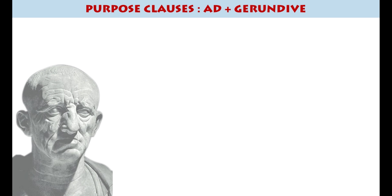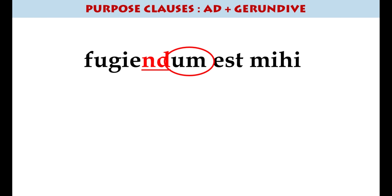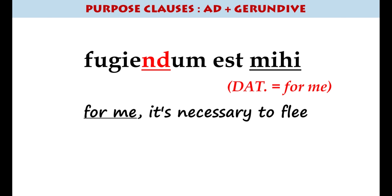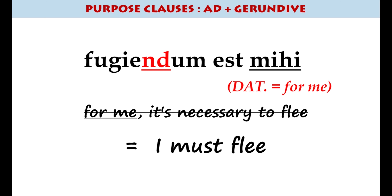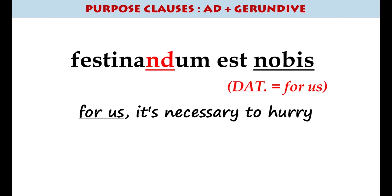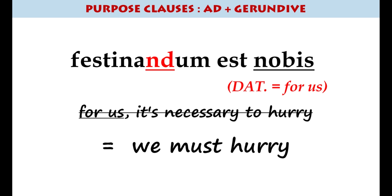This form of the gerundive, especially in the neuter form, will sometimes come up at GCSE. You might see it with a dative pronoun — for example, 'mihi' — meaning 'it is necessary for something to be done'. So: 'Festinandum est nobis' — 'for us it is needing to be hurried', in other words, 'we must hurry'.